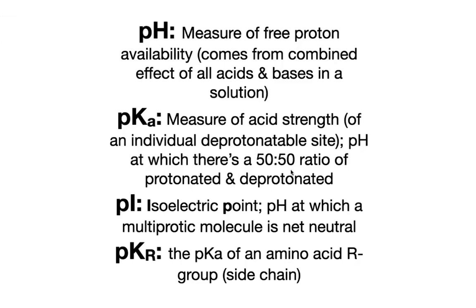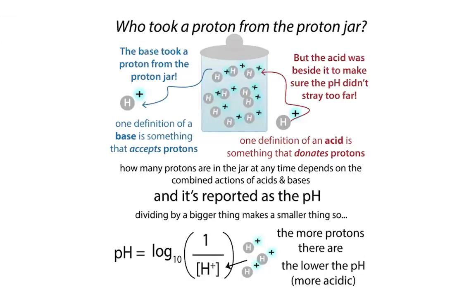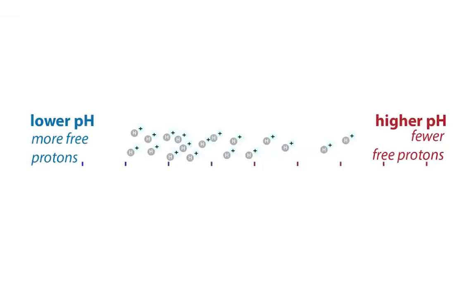pH is a measure of your free proton availability. This is telling you about the solution — how many protons are in the solution. It's an inverse scale, so the more protons there are, the lower that pH is actually going to be.